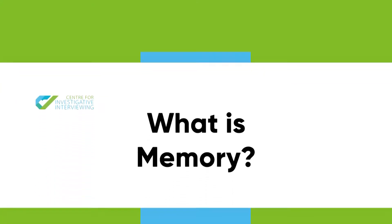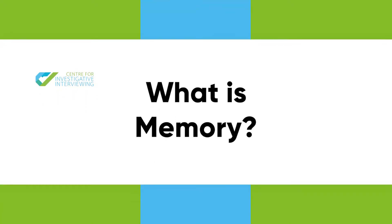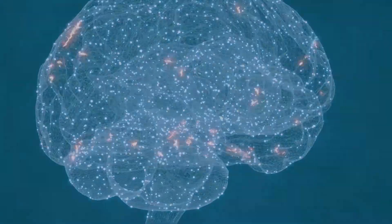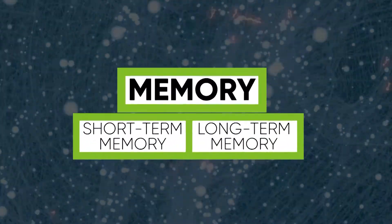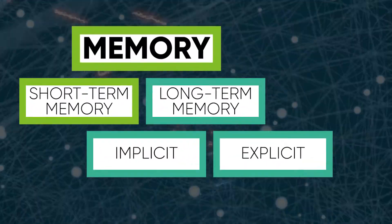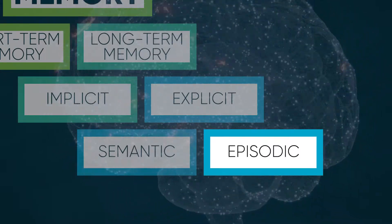Throughout this presentation, we're going to refer to information gatherers as interviewers, even though some professionals don't use the term interviewer. Memory is a broad concept referring to different structures and processes in the brain. Memory can be divided into different categories, but the type of memory involved in recollecting specific events is called episodic memory.